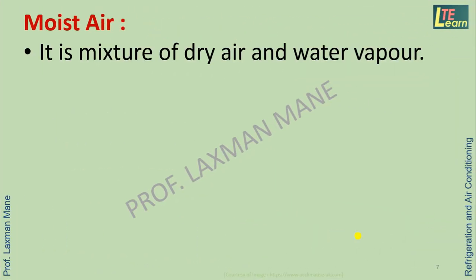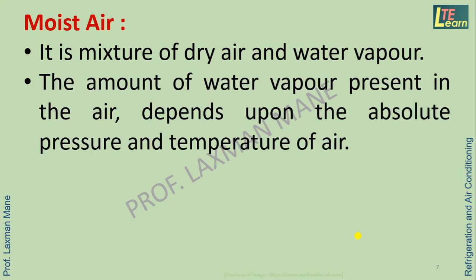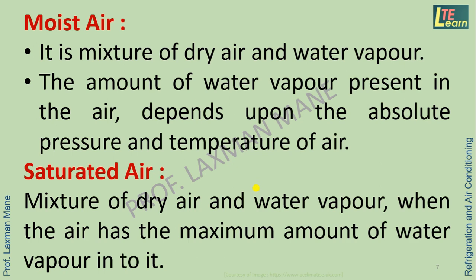Moist air is a mixture of dry air and water vapor suspended in air. The amount of water vapor present in the air depends upon the absolute pressure and temperature of air. Saturated air is a mixture of dry air and water vapor when the air has the maximum amount of water vapor in it, so it is not possible to add more vapor after the condition of saturated air.